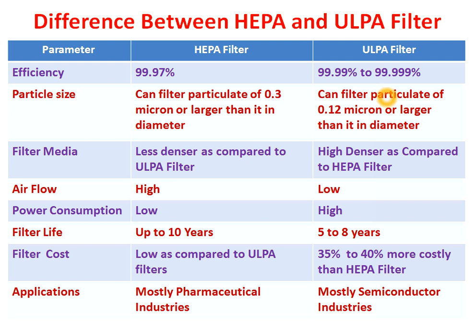Now we will see filter media. The HEPA filter has less dense filter media compared to the ULPA filter, whereas the ULPA filter has higher density filter media.